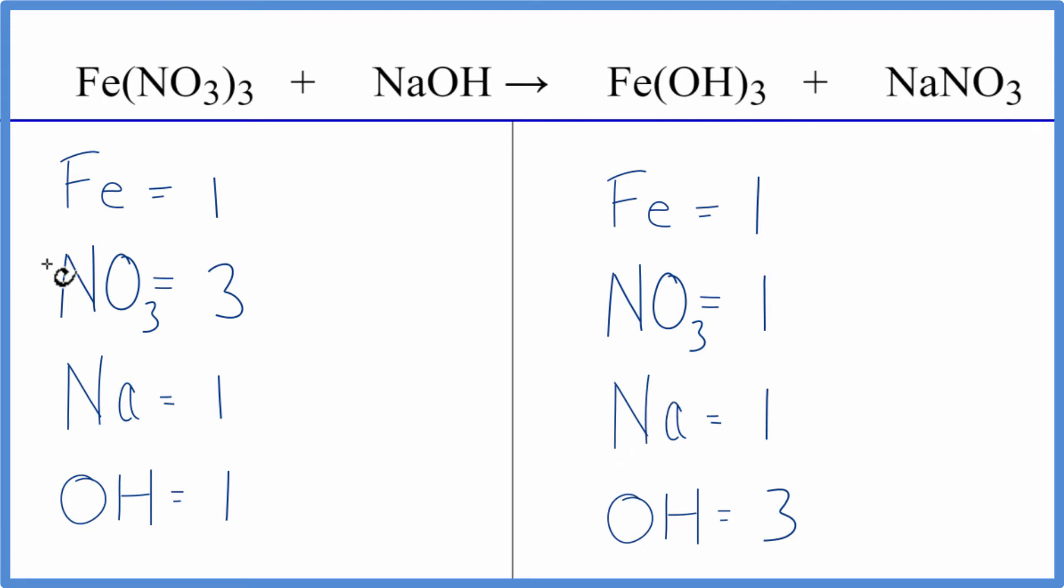Let's see, we could balance the nitrates. We have one here and three here. So if I just put a three in front of the sodium nitrate, I have one times three. That gives me three nitrates. So that's balanced.